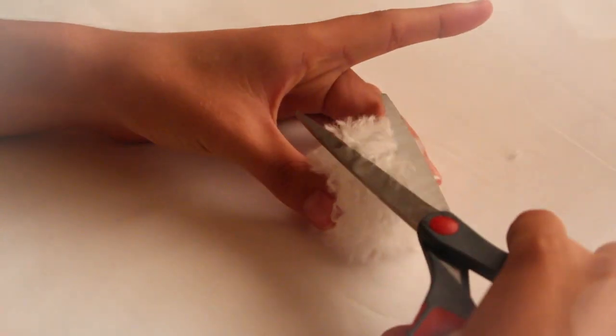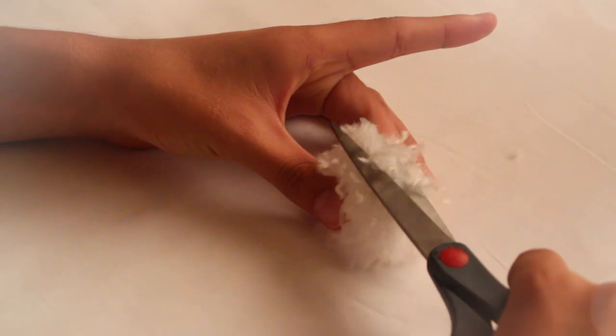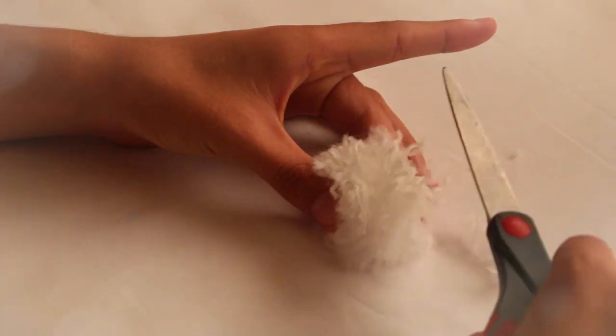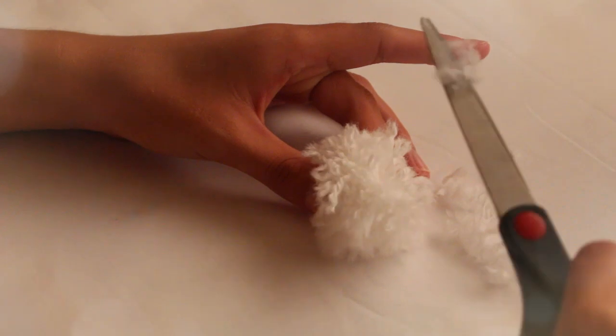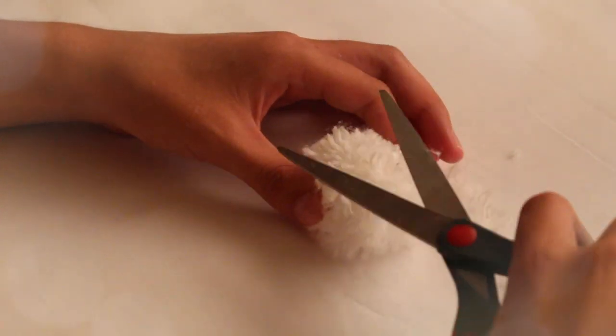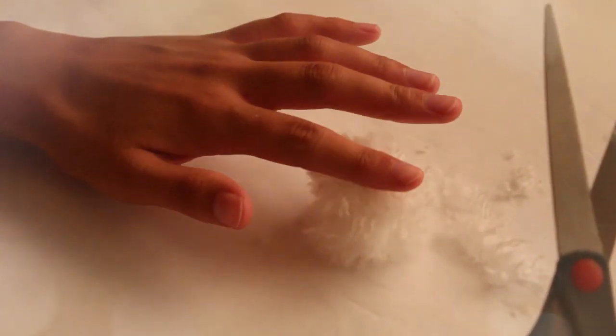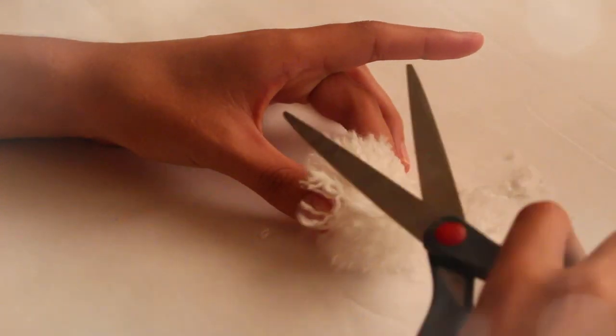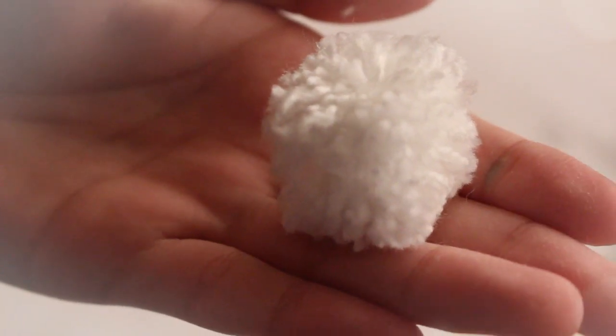Start trimming the pom pom to be a cube with flat sides. Start with one side and keep rotating it until all sides are flat. Keep trimming until you're happy with the shape.